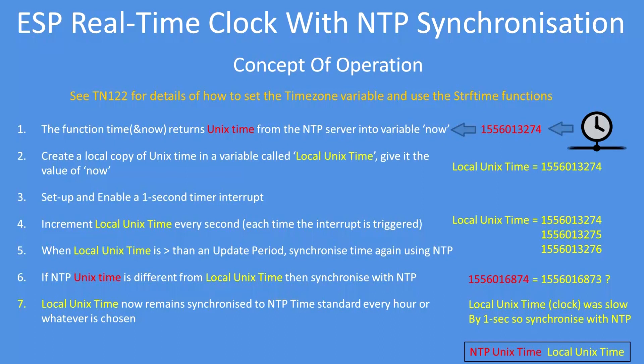What I do in the design is create a local copy of it. I assign local Unix time to Unix time, so local Unix time now equals 1556013274. Then I set up a one-second timer-based interrupt whose job is to increment local Unix time every one second, giving you one-second resolution on your clock.